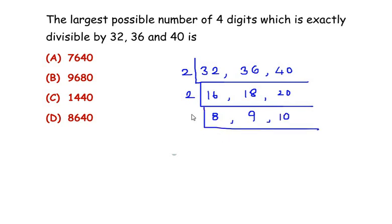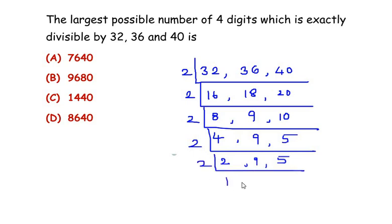Now this again goes in the table of 2, that is 8 and 10. So we write 2 times 4 gives you 8, 9 does not go in the table of 2 so we keep it as is, and 2 times 5 is 10. Again this goes in the table of 2, so 2 times 2 is 4, and 9 and 5 do not go in the table of 2. Finally, let us divide this by 2: 2 times 1 is 2, and 9 and 5 still remain the same.